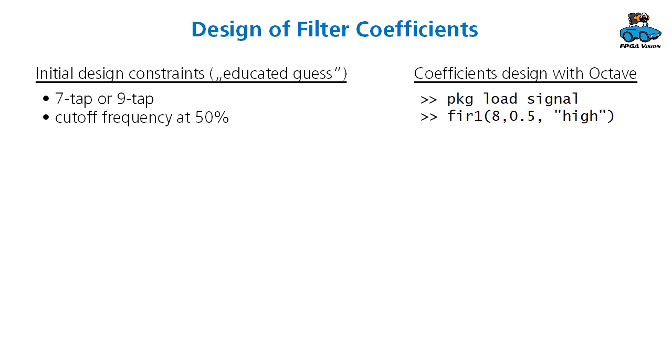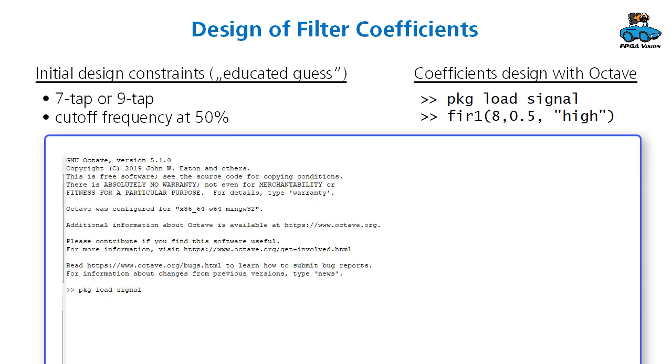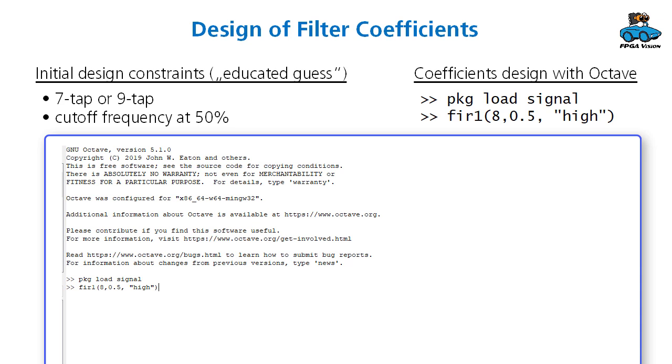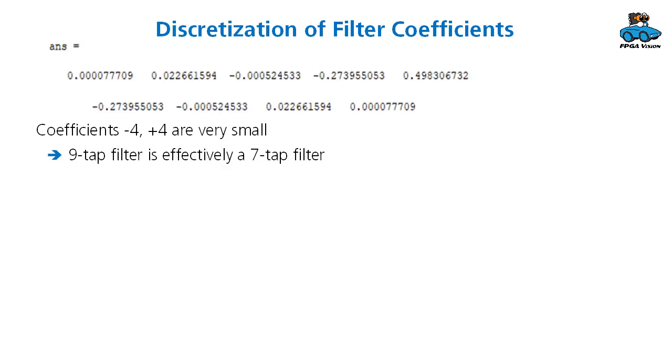Now there are different methodologies to design the coefficients. Here I want to show you the usage of Octave, but there are also other options. In Octave you have a function to determine the filter coefficients and then you get certain values. If we have a closer look, we see that the coefficients minus four plus four are very small. So they are nearly zero. And the nine tap filter is effectively a seven tap filter.